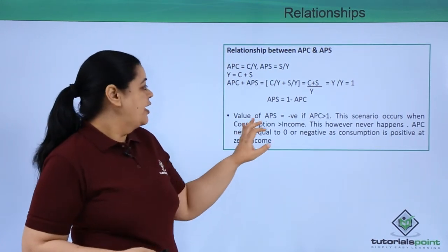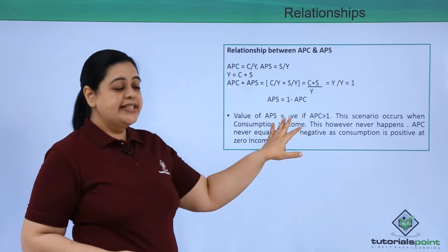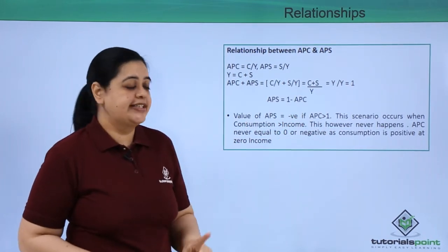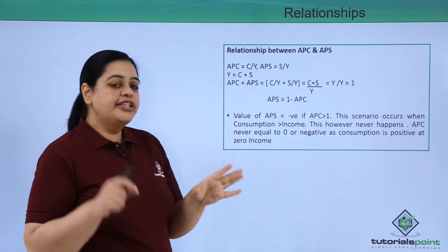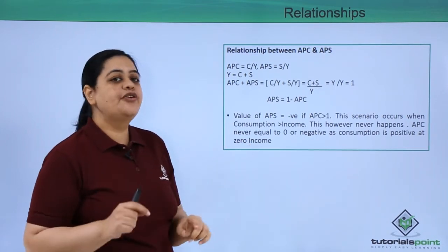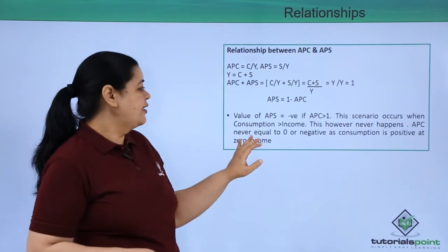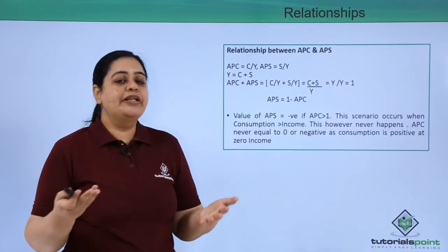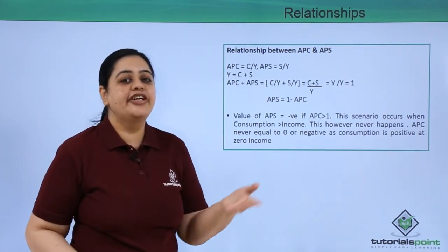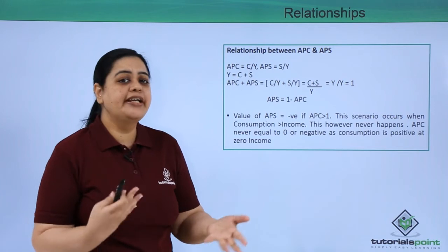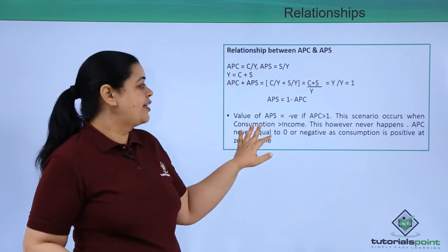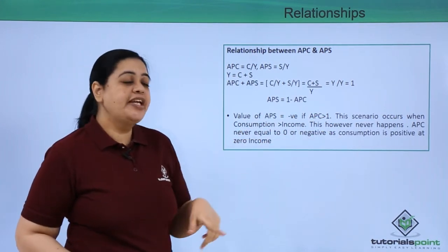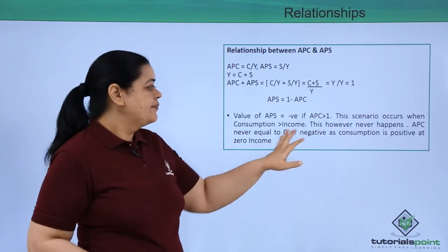The value of APS becomes negative when APC is greater than 1. This occurs when consumption exceeds income — for example, if you earn 100 rupees but spend 200 rupees, your APS would be negative.